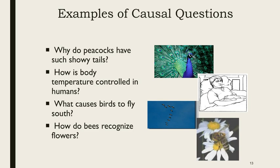Any question that starts with the word 'why' is automatically a causal question — because you can hear the causal root there. Another causal question: How is body temperature controlled in humans? This gets at explaining a mechanism. Maybe it's controlled by some part of the brain, by how many clothes you're wearing, or by your mood — those are tentative explanations, which is how you recognize a causal question.